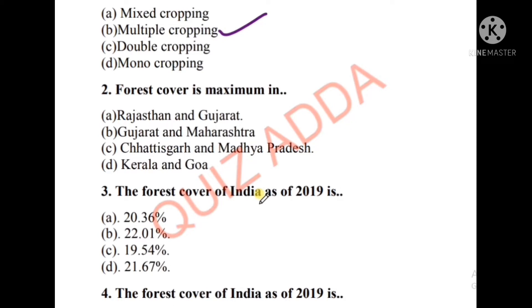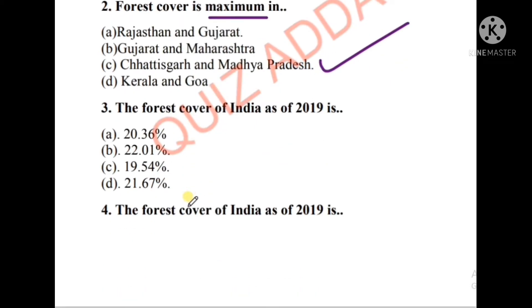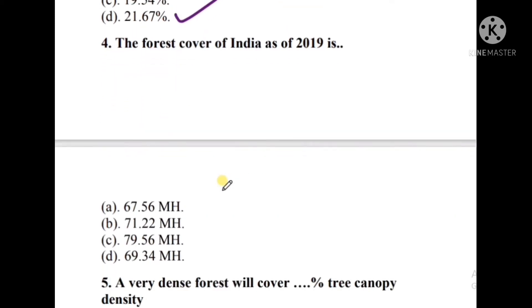...Chhattisgarh and Madhya Pradesh, or Kerala and Goa. The right answer is option C — Chhattisgarh and Madhya Pradesh, where forest cover is maximum. Question number three: The forest cover of India as of 2019 is how many percent? The options are 20.36%, 22.01%, 19.54%, or 21.67%. The right answer is option D, that is 21.67%.